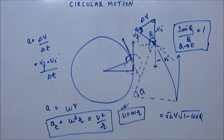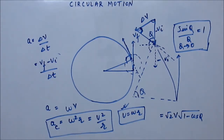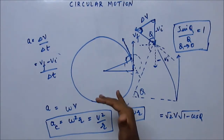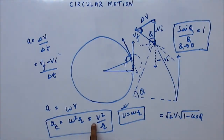It cannot change the speed; it only changes the direction. So this amount of acceleration is required just to change the direction of the particle moving in a circle. The force required will be mass times this acceleration, so centripetal force will be m·ω²r or mv²/r.